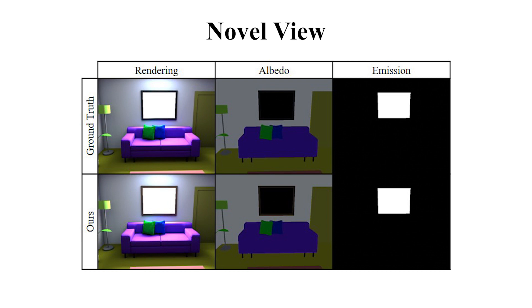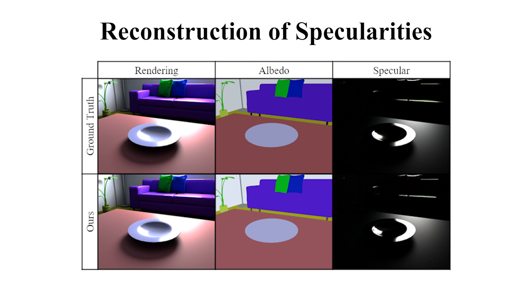Here we show examples with novel views that have not been seen by any input image. By optimizing for the roughness parameters of the objects in the scene, we are able to reconstruct specular reflections.